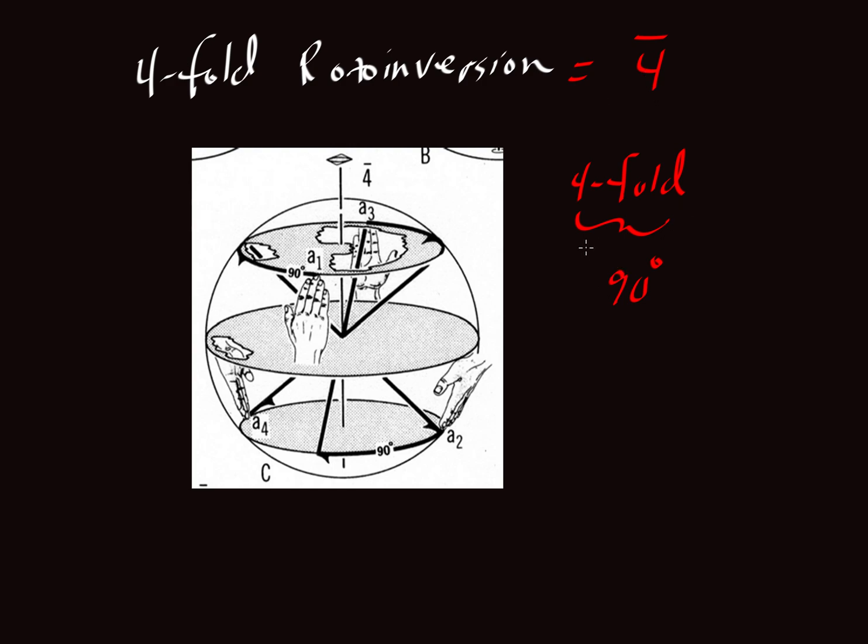In this case, we're not going to be done. We're going to rotate 90 degrees and then invert through an inversion point, and we'll label it I. And there it is in this nice diagram by Bloch.